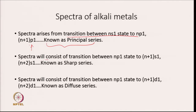The spectra of alkali metals also consist of transitions between Np1 state to N+1s1 or N+2s1. So we are looking at the transition from the first or second excited state to N+1s1 or N+2s1 state. This is an allowed transition since ΔL is −1. When the electron is landing in the S orbital, the spectra due to transitions between these states are known as the sharp series.